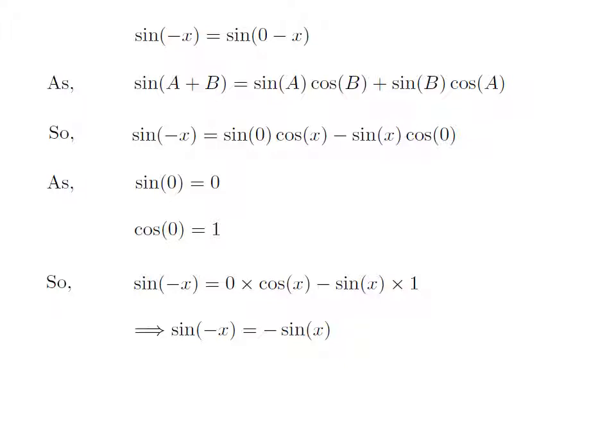As 0 into cosine of x is equal to 0 and minus sine of x into 1 is equal to minus sine of x, so sine of minus x is equal to 0 minus sine of x, which is equal to minus sine of x.